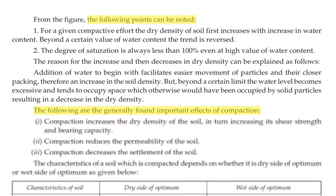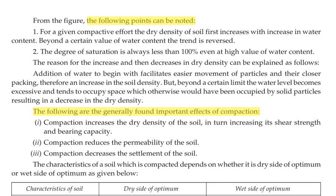From the graph we observe the following points: for a given compactive effort, the dry density of soil first increases with increase in water content, but beyond a certain value of water content the trend is reversed. Also, the degree of saturation is always less than 100% even at a high value of water content. So dry density first increases and then decreases.